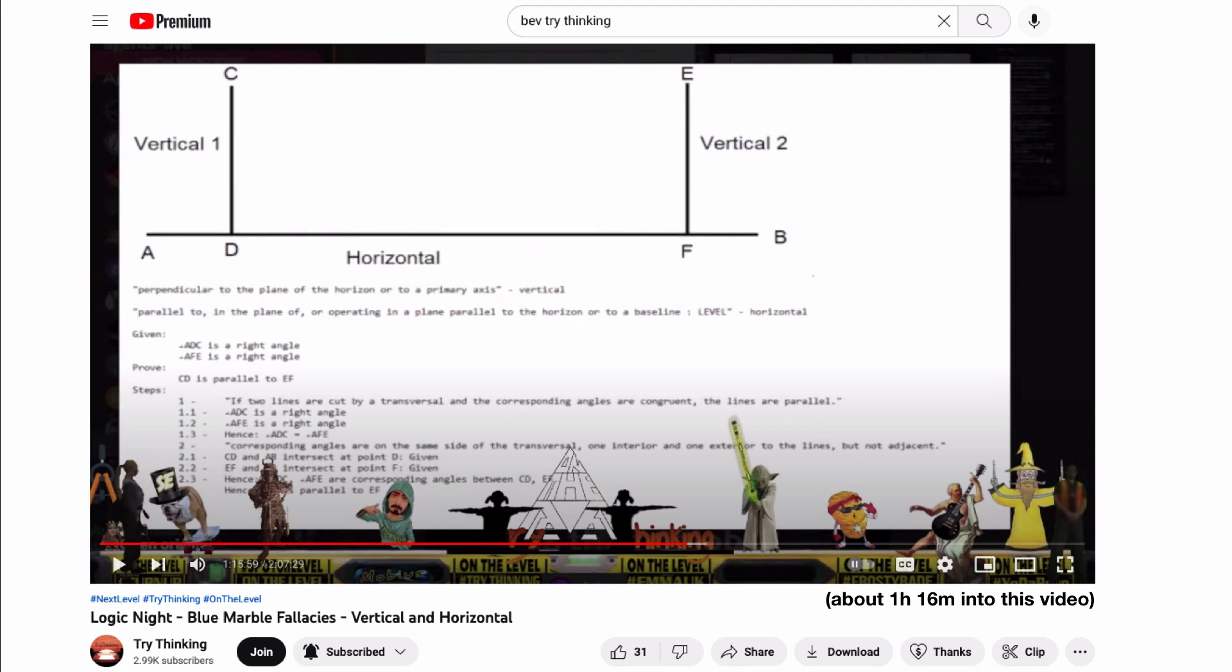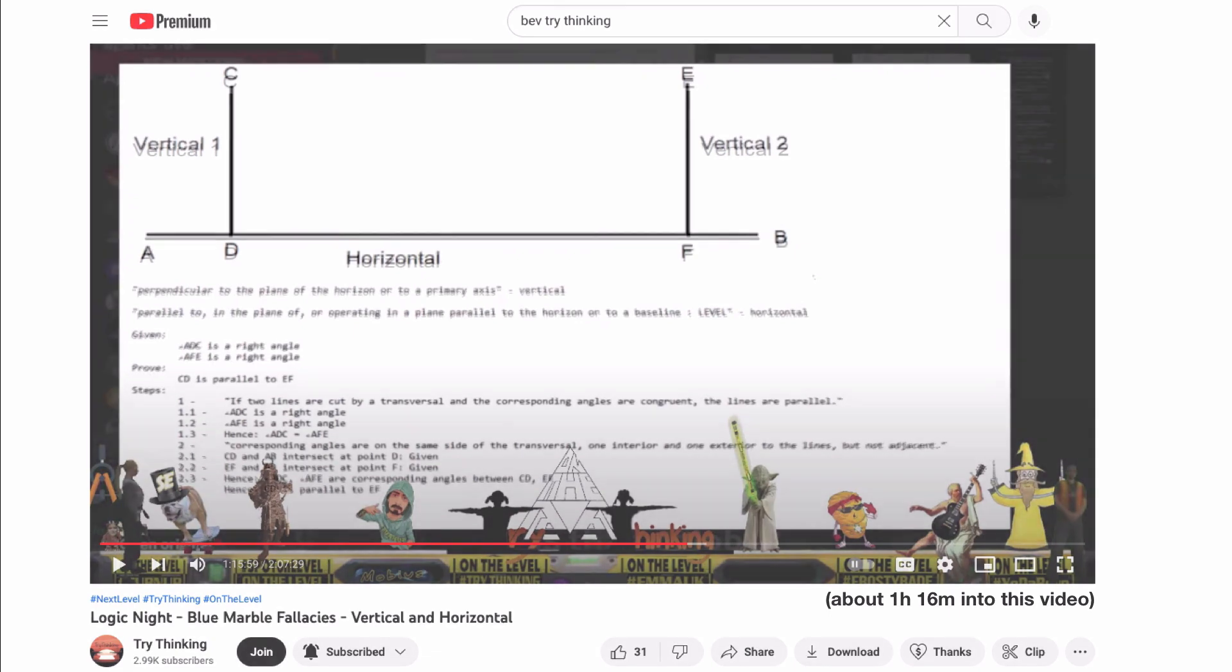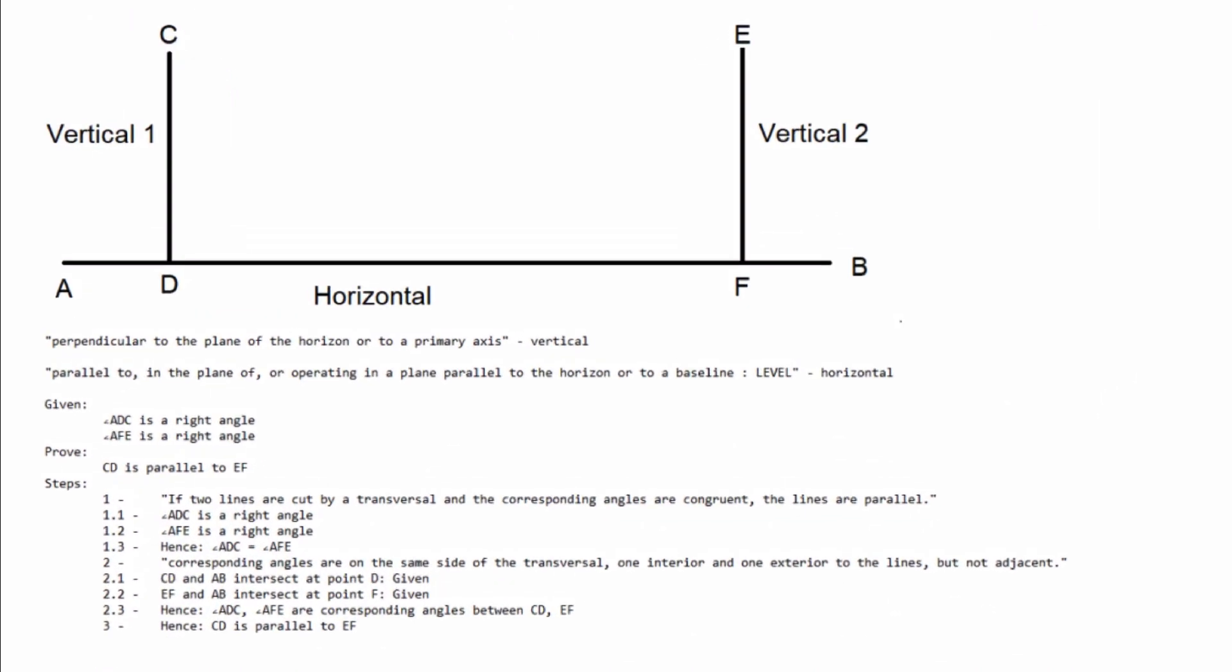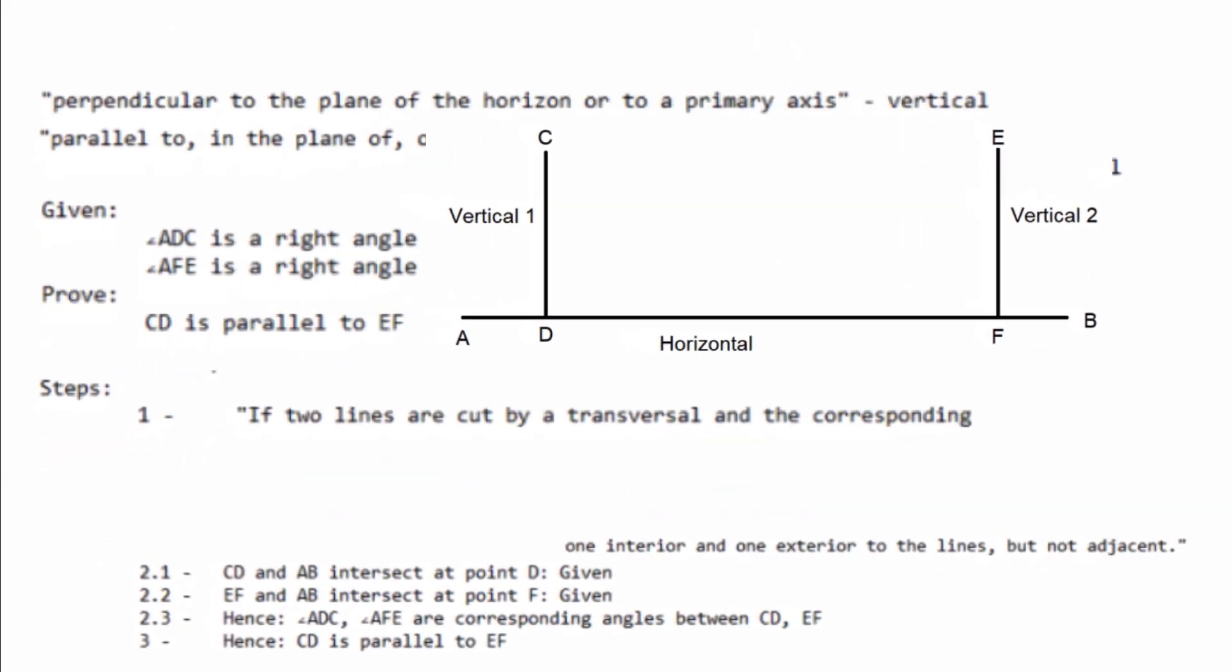Now let's get back to the diagram that started it all on Bev's Try Thinking Discord live stream. So let's remove the clutter and make it bigger, and move things around so I can make the text size larger. We'll step through this together.